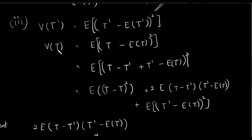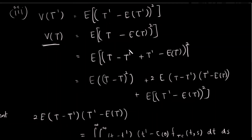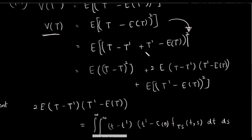The expectation of T is the unbiased estimator. We write the variance of T-dash as the expectation of T-dash minus the expectation of T-dash squared. We define the expectation of T-dash according to this definition.